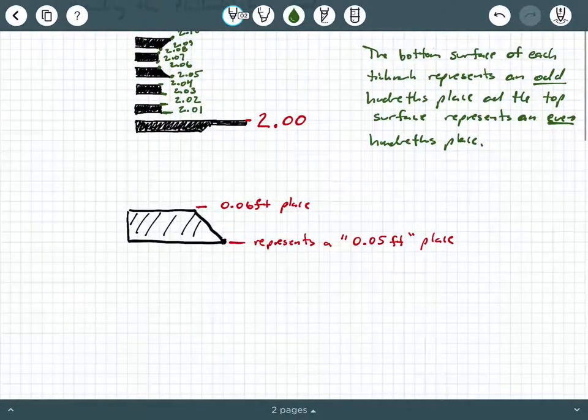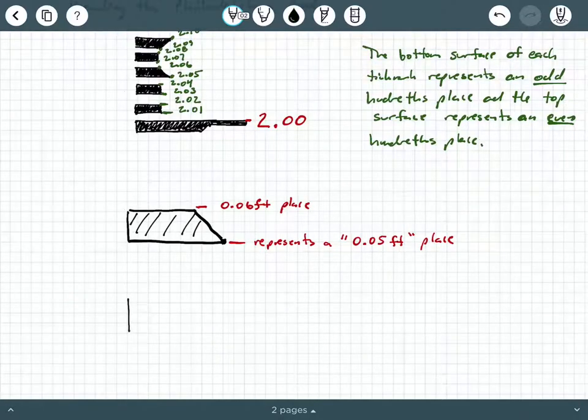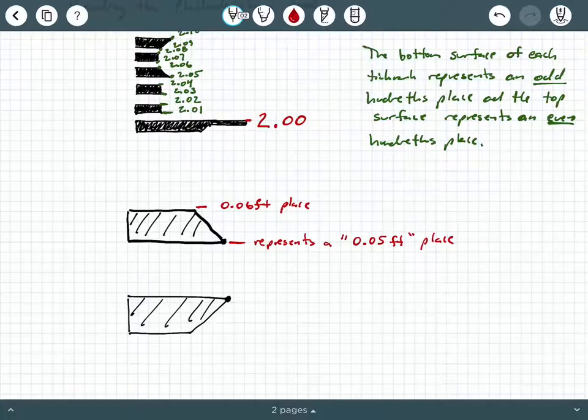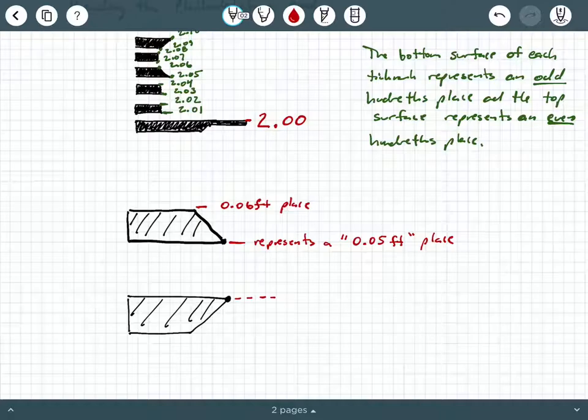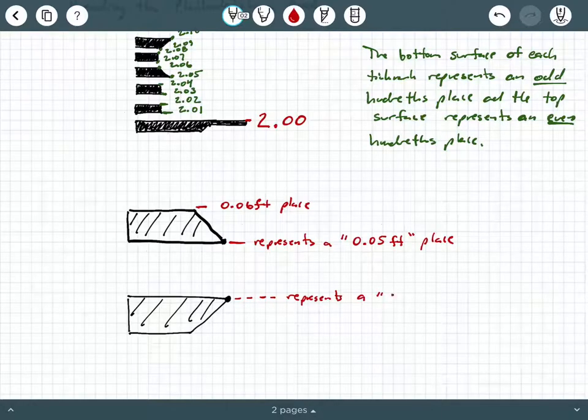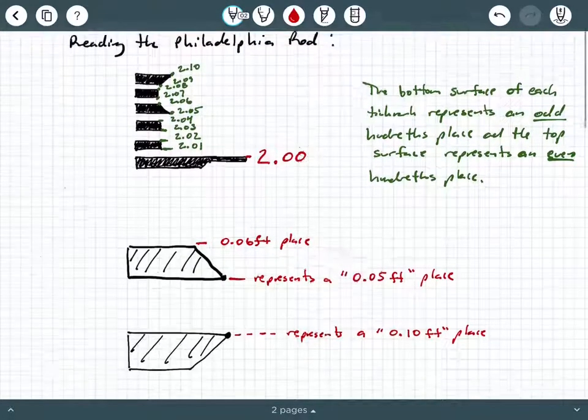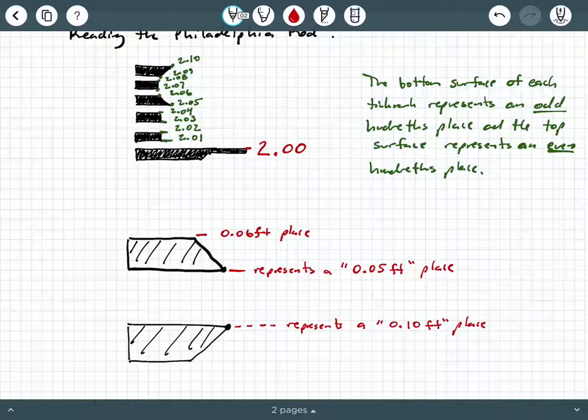So that brings me to my next trapezoidal shape. I'm going to blow that up a little bit for us to see a little bit better. So this top point right here, when you have the trapezoid with the tip at the top surface, this represents a 0.10 foot place, decimal place. So again, these just repeat over and over again, going up and down.